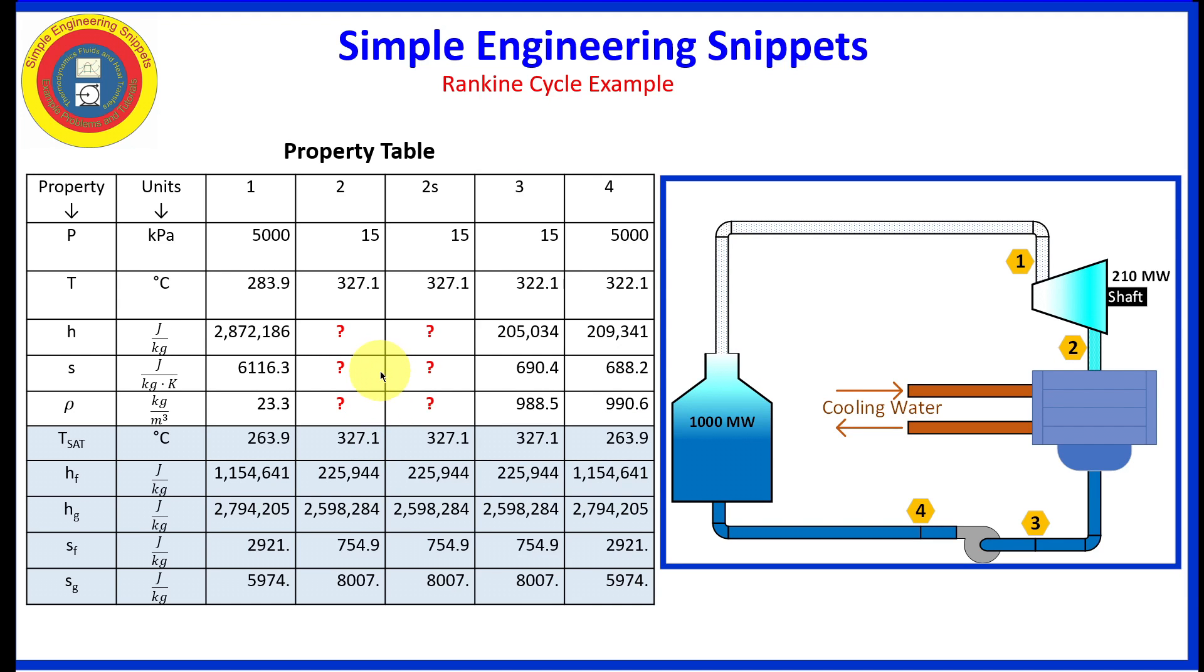This video is not on how to determine steam properties and water properties, and so I've used function calls from a water property library to obtain these and we'll be calling these back up as we need them. Note that we do have all the saturation properties for 5000 kilopascals and 15,000 kilopascals. And again, we'll be using a lot of these in our analysis.